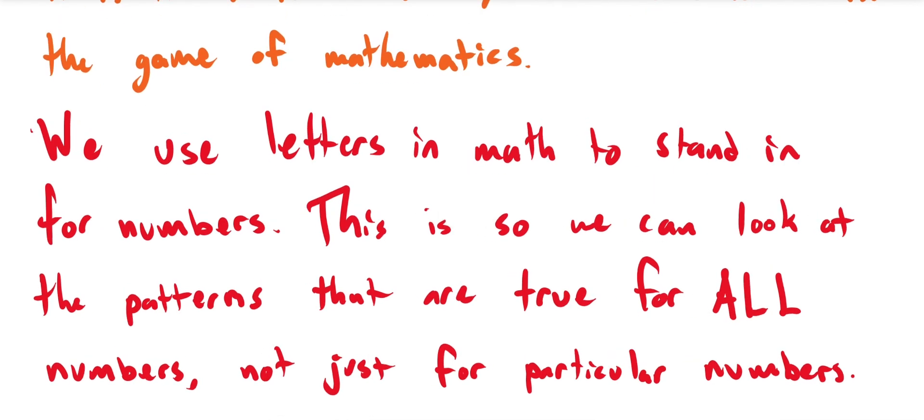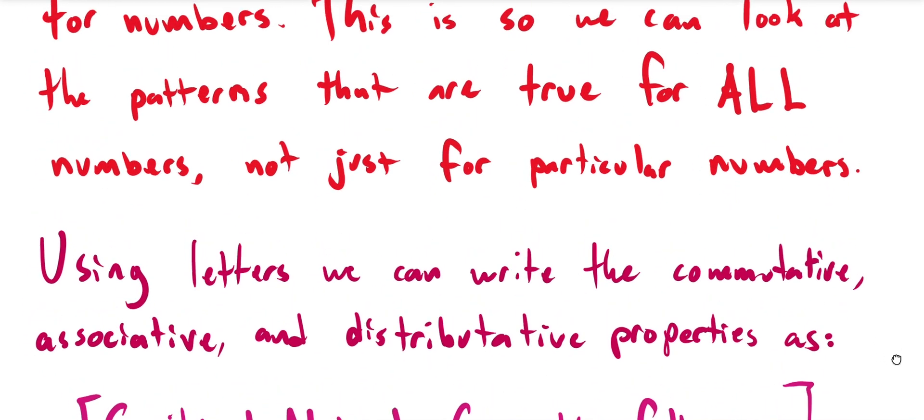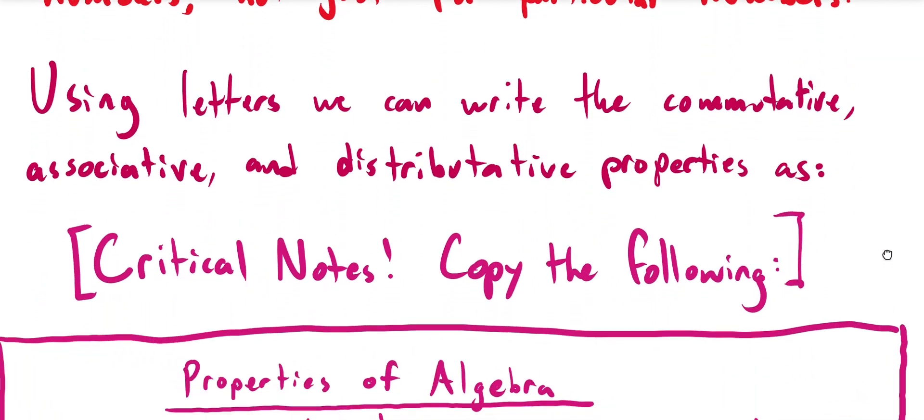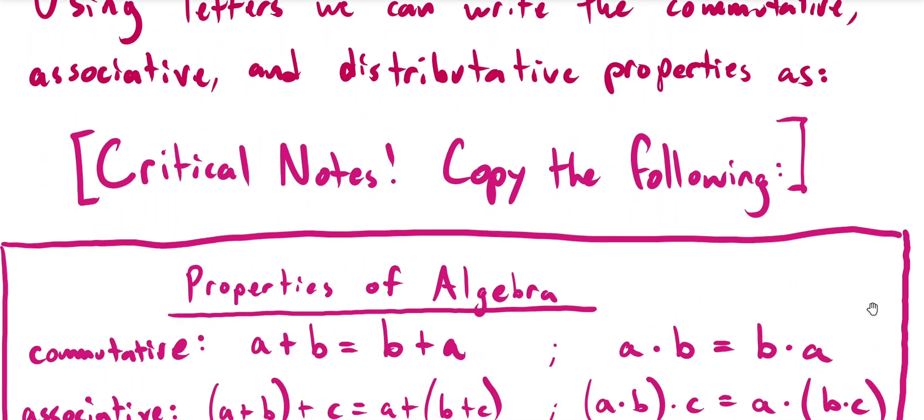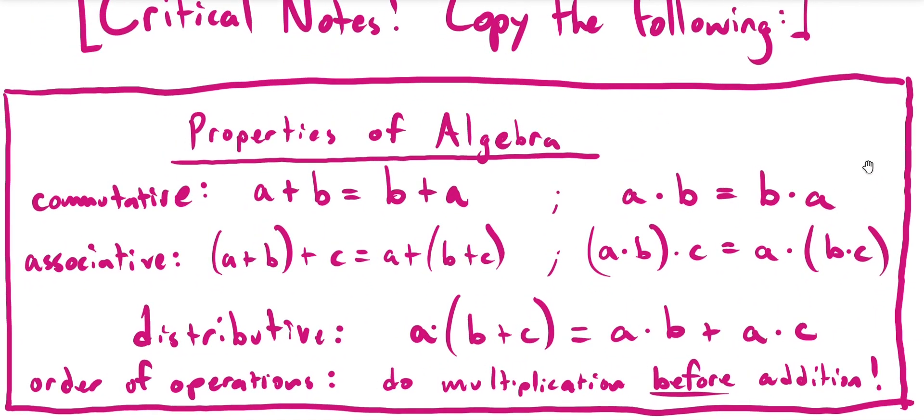Now, we use letters in math as a stand-in for numbers. This isn't to make things more confusing. This is so that we can take a look at the patterns that are always true and not just true for some particular numbers. A few of those kinds of patterns, we just took a look at. Those don't matter if I used fours or twos or threes or if I used any other numbers. And so what we wind up with is a way of writing things using these letters, which we can use to encode those properties. So here is your first of the critical notes. I want you to copy this down into your notes. This will be something that you turn into me. These are the properties of algebra. Pause the video at this point in time and copy this down.